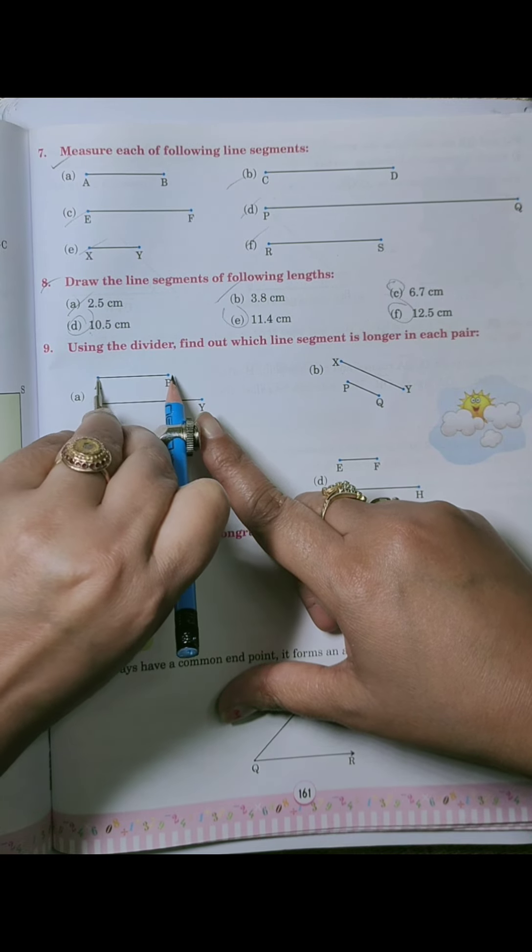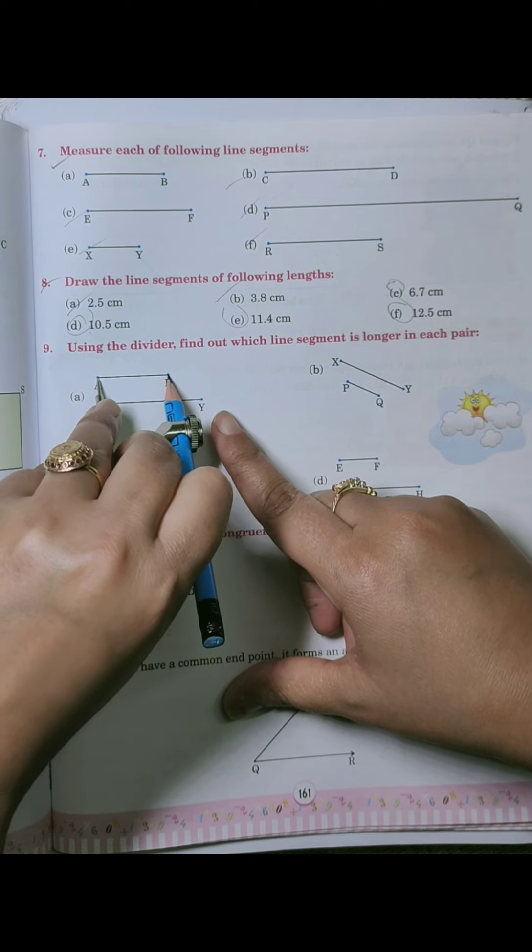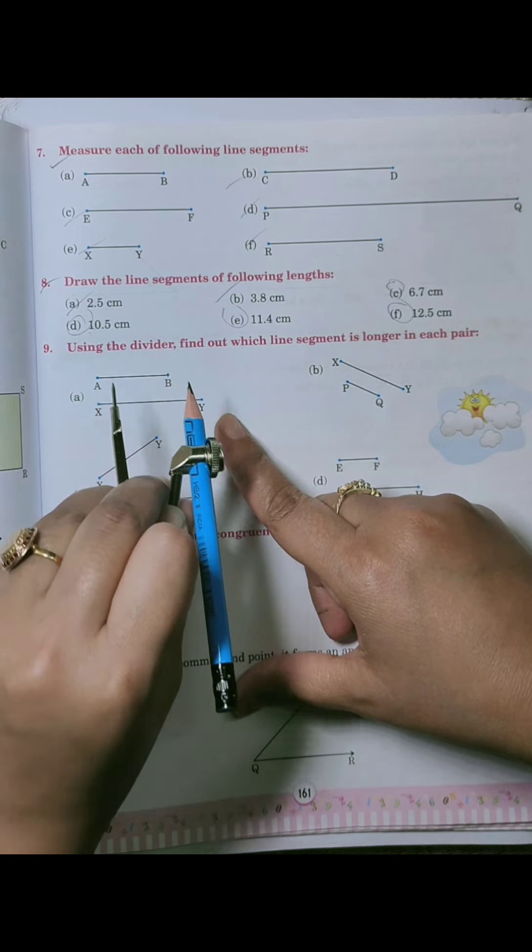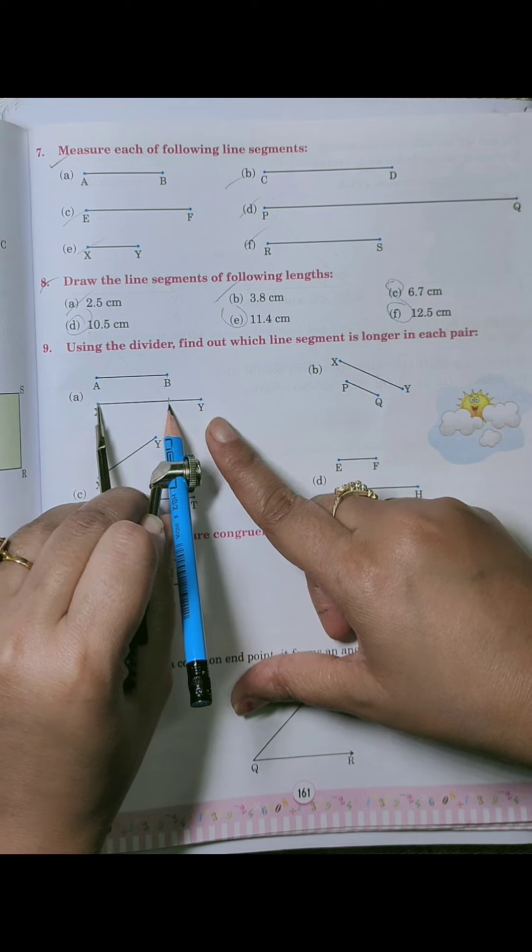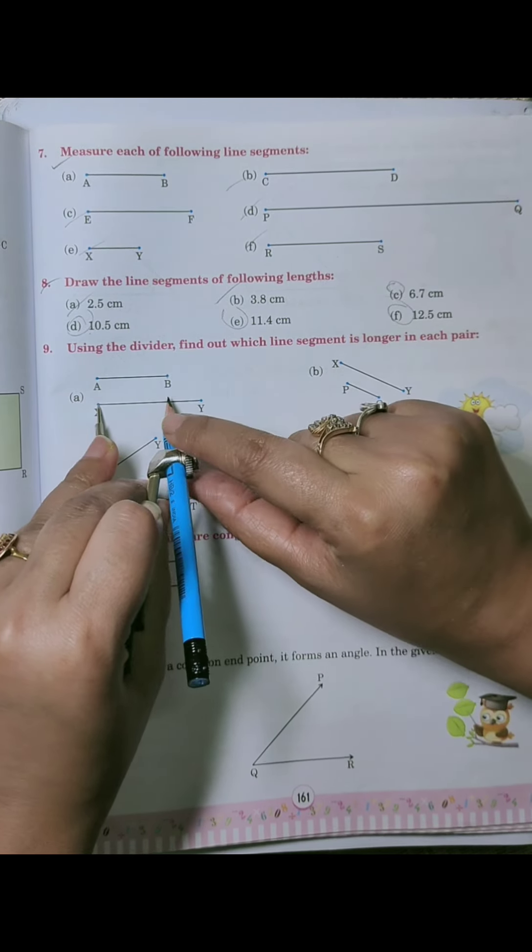Now we will measure XY line segment. So XY is the same? No. So which line segment is longer in each pair? This is longer.